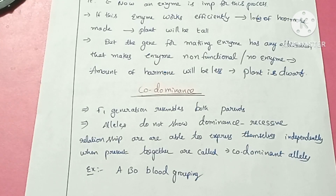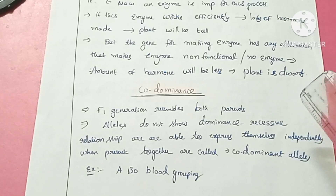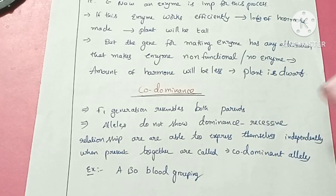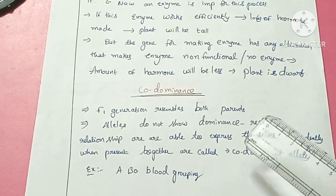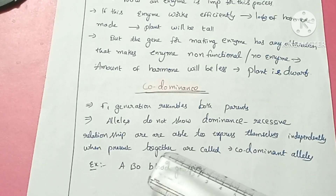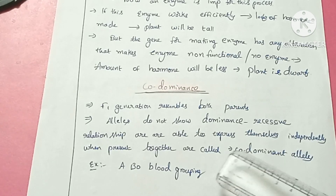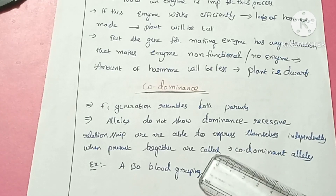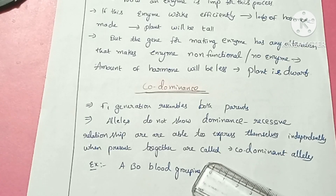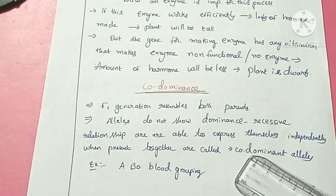Incomplete dominance is the appearance of an intermediate phenotype in the heterozygous condition. But what is co-dominance? In co-dominance, the F1 generation resembles both parents. The alleles do not show a dominance and recessive relationship — instead, they are able to express themselves independently when present together. These are called co-dominant alleles.